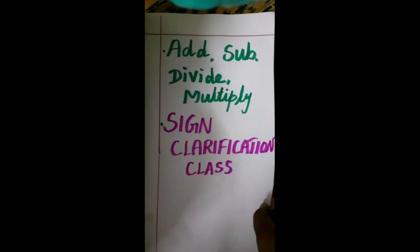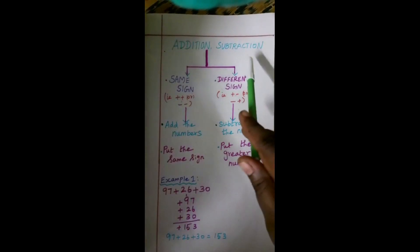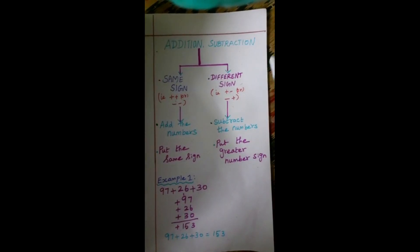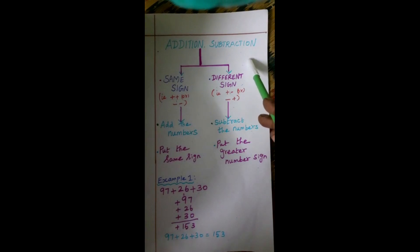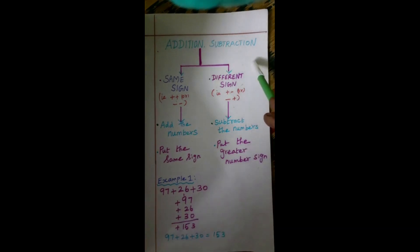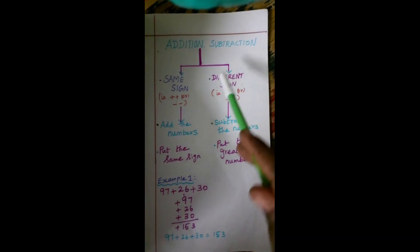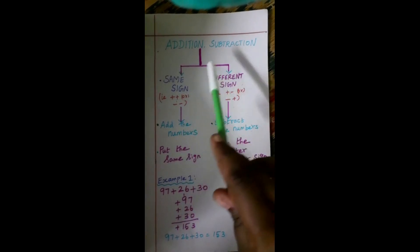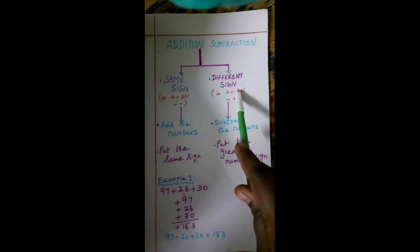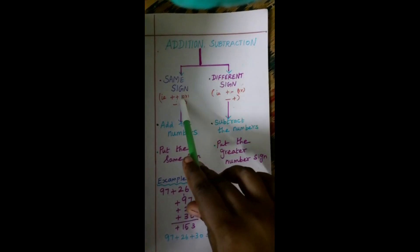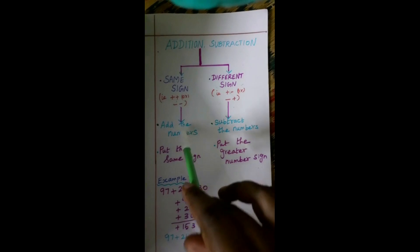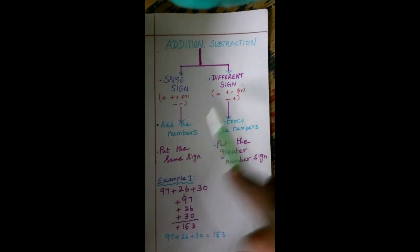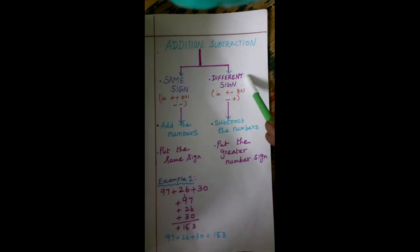We move on to the first flowchart. This flowchart explains the addition and subtraction sign rule. Whatever sum is given in addition and subtraction, first we check whether the sum contains the same sign or a different sign. If the sum contains the same sign, you will follow one set of steps. If the sum contains a different sign, you will proceed with these other steps.